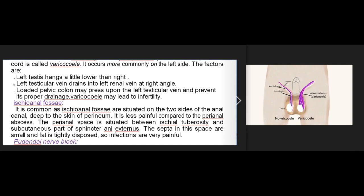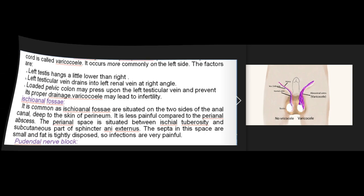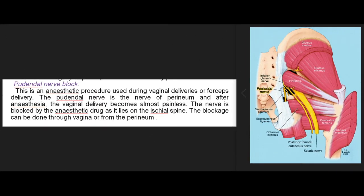Ischioanal fossae abscess: it is common as the ischioanal fossae are situated on two sides of the anal canal, deep to the skin of the perineum. It is less painful compared to the perianal abscess. The perianal space is between the ischial tuberosity and the subcutaneous part of the external sphincter; the septa in this space are small and fat is tightly disposed, so infections are very painful.